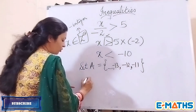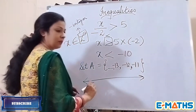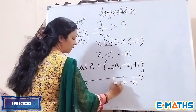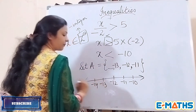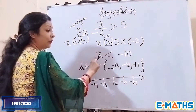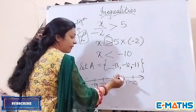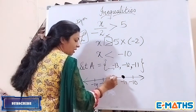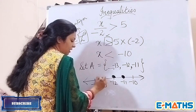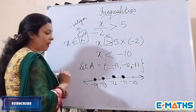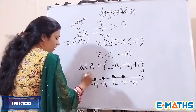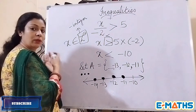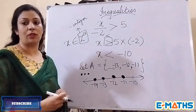To represent this on a number line, draw a number line starting from minus 10, then minus 11, minus 12, minus 13, minus 14. We do not mark minus 10 because x is strictly smaller than minus 10, so we start marking from minus 11. Darken the dots for each value, and add three extra dots to show the line extends to infinity.